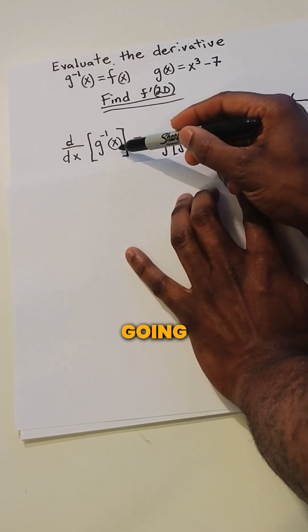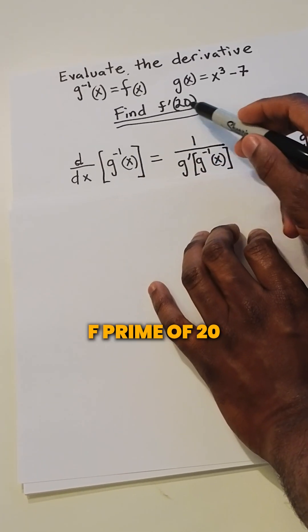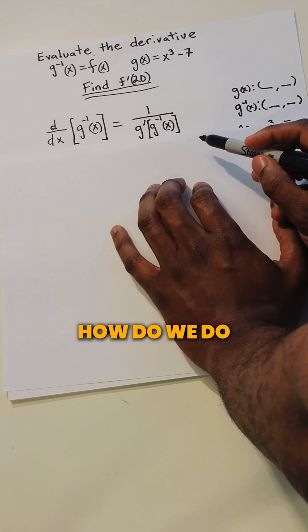Now, in this problem, our x value is going to be 20. This x value is 20 here because we're trying to find f prime of 20, and that's simply the inverse. So how do we do that?